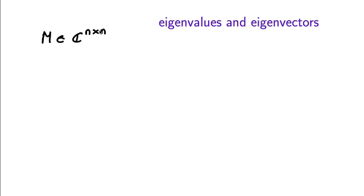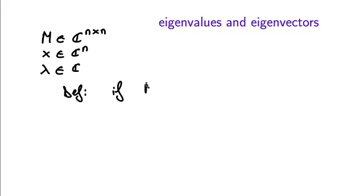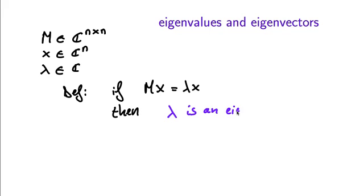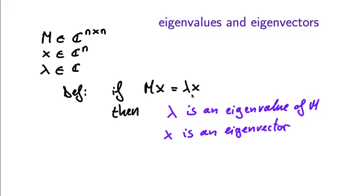Let M be a square matrix. We will only deal with real-valued matrices, but for now let's look at the definitions in more generality. Say we have a matrix with complex entries, some vector x, and some number lambda. Then we give the following definition: if the equation Mx equals lambda x is satisfied, then lambda is an eigenvalue of the matrix and x is an eigenvector of M with respect to eigenvalue lambda.